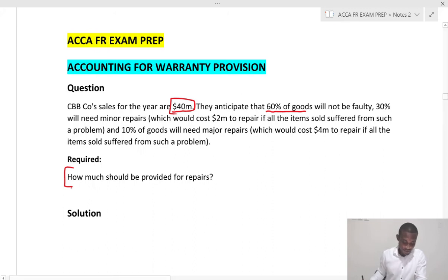30% will need minor repairs which will cost 2 million to repair if all the items sold suffer from such a problem. And 10% of goods will need major repair which would cost 4 million to repair if all the items sold suffer from such a problem.